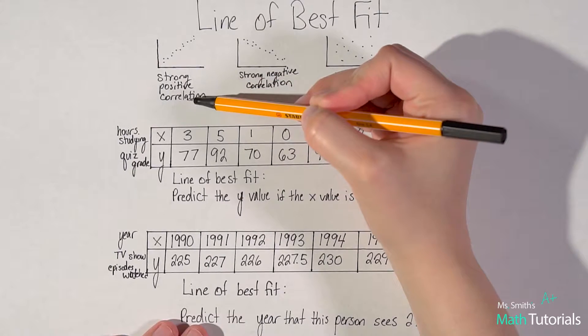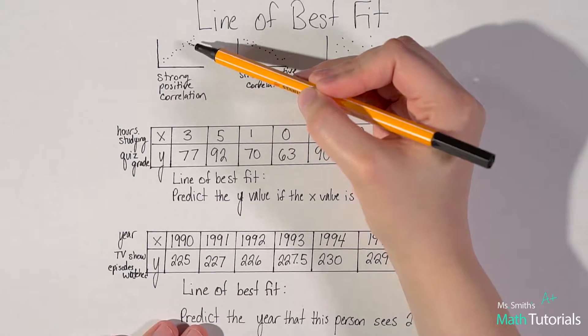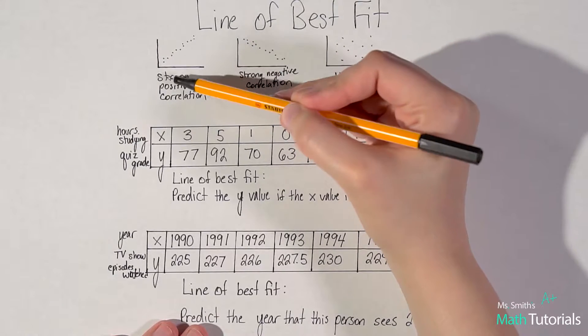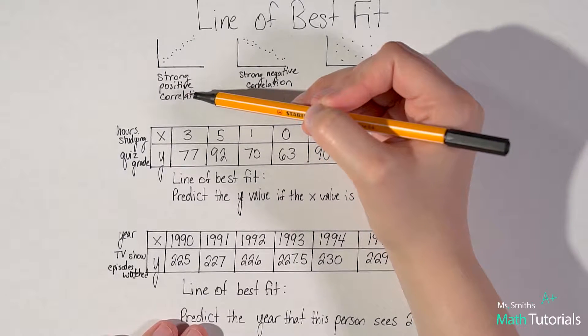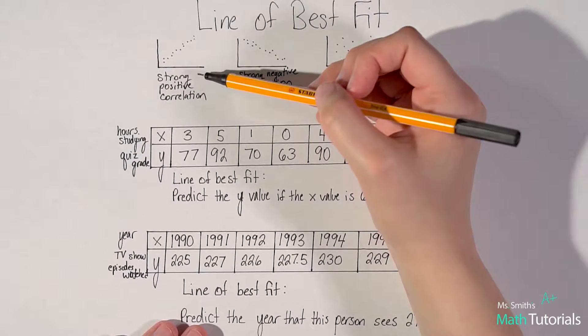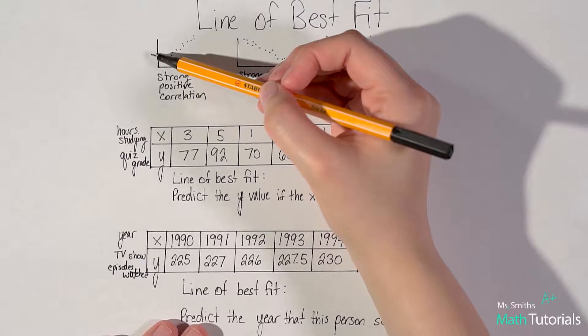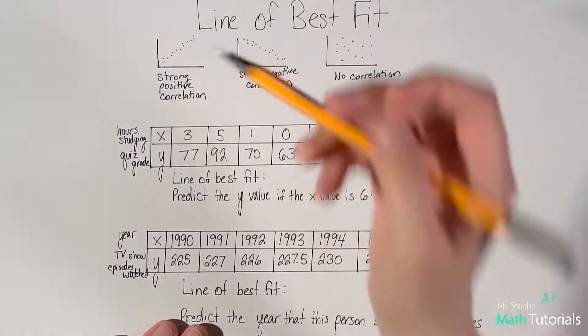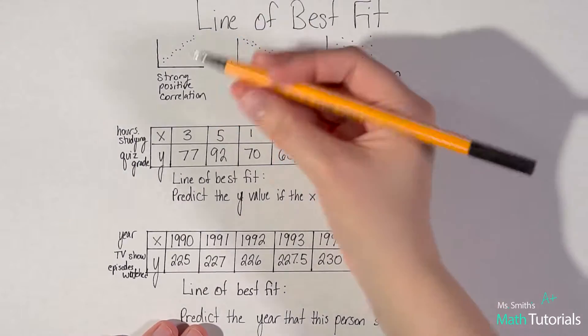So a strong positive correlation means that when you line your data points up, when you plot them and there's a very tight line of data points, we would call that a strong positive correlation. Correlation means like a relationship between our x and our y values. Maybe statistics show that there's a tight line there.